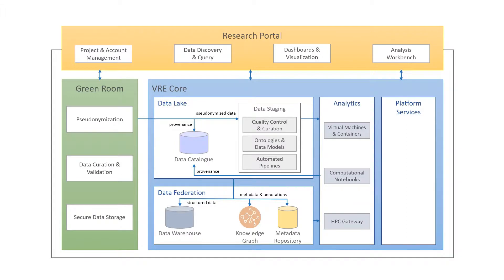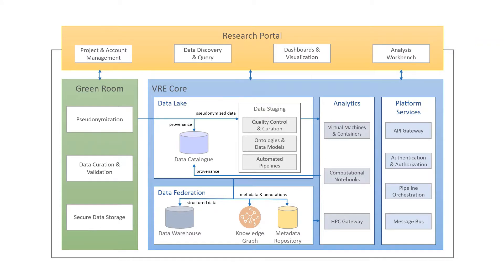All of the functionality in the Green Room and VRE core is supported by critical platform services, including an API gateway to route requests from the portal to the appropriate backend systems, authentication and authorization services to manage user identities and access control, a pipeline orchestration framework that allows workflows to be automated, and a message bus service through which platform systems can communicate.